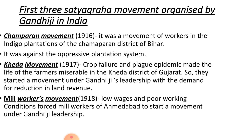Next is Khera Satyagraha. The Khera movement was directed against the government. In 1918, there was a drought in Khera district of Gujarat. People were affected by crop failure and plague epidemic. The Bombay government insisted on extracting its land revenue. The land revenue rule provided for the remission of land revenue if the crop yield was less than 25% of the norm, but the government refused this remission. Gandhiji, with the help of a Peasant Organiser Satyagraha, the government had to agree to the demands of the peasants in the end.